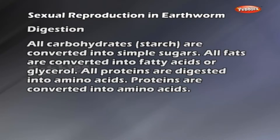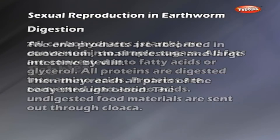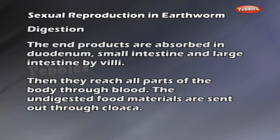The end products are absorbed in the duodenum, small intestine and large intestine. They then reach all parts of the body through blood. The undigested food materials are sent out through the cloaca.